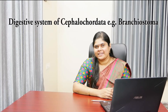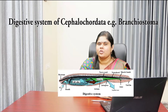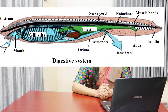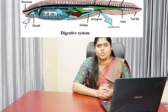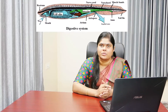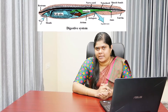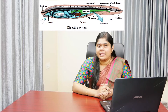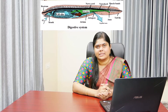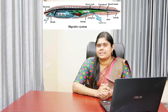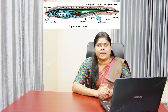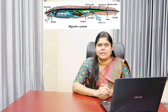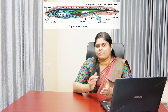Hi, this is Leija here. Today we are dealing with the digestive system in detail. The digestive system consists of the alimentary canal and associated digestive glands. The alimentary canal is a straight and complete tube extending from mouth to anus, and it is lined throughout by ciliated epithelia, and its diameter varies in different parts.